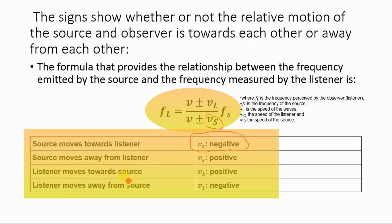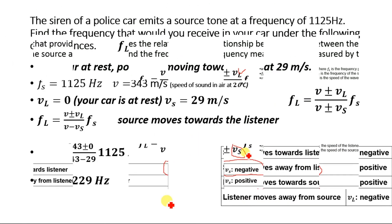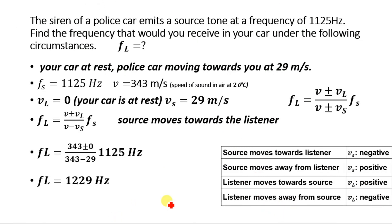When the listener moves toward the source — when your car is approaching the police vehicle — VL will be positive. When the listener moves away from the source, VL will be negative. Now let's solve the numerical.